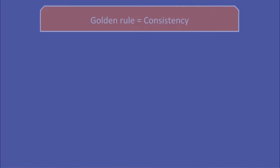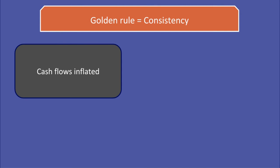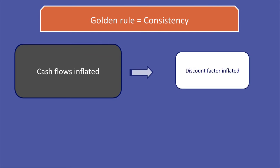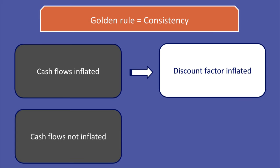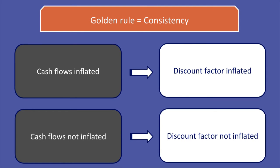The golden rule here is consistency. In other words, if cash flows are inflated, then so must the discount factor be, and if the cash flows exclude inflation, then so should the discount factor. What you cannot do is mix the two.